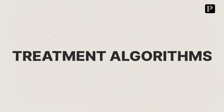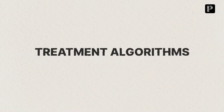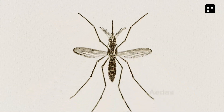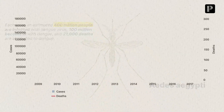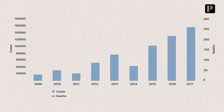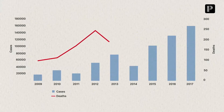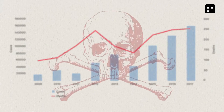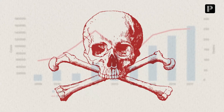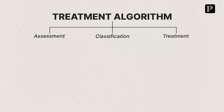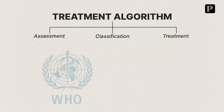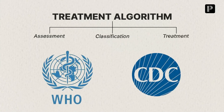Welcome to Treatment Algorithms. Today we will be discussing Dengue Fever, which has become a growing global health crisis affecting over 100 million people each year. In India alone, tens of thousands of cases are reported annually with thousands of deaths as a grim reminder of the dangers this mosquito-borne illness causes. Today we'll dive into how to assess, classify and treat this disease based on trusted guidelines from the WHO and CDC.